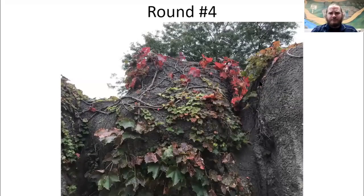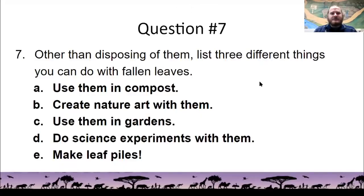And finally, round four. Now, this one, there's really no right or wrong answer, but here are a few things that you can do. You can use them in compost. They make for great compost or a great ingredient in compost. You can create nature art with them. That's always a lot of fun. You can use them in gardens. They make a great mulch as well as provide nutrients to a garden, to the soil. And then you can do science experiments with them. There are a lot of really cool things you can do, especially with looking at those different pigments in them. And then finally, of course, you can make leaf piles and either hide in them or jump in them. So if you got any of these or anything else other than burning them, which we should never do, or just throwing them away, which is a waste of a good resource, then that counts.